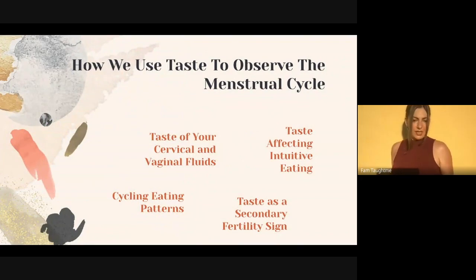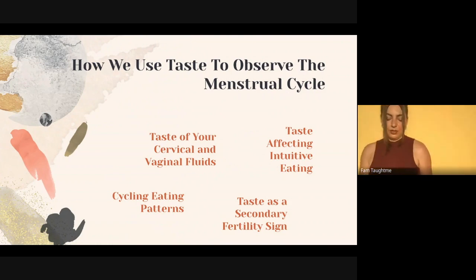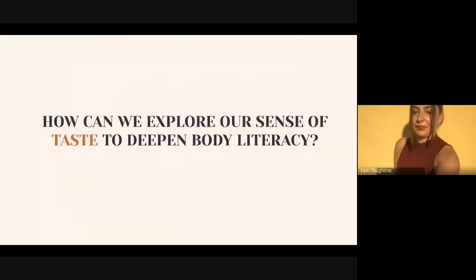How do we use taste to observe the menstrual cycle? We sometimes taste our cervical and vaginal fluids ourselves or partners taste them. Taste affects intuitive eating, so what you're craving changes. Taste is a secondary fertility sign where you notice changes associated with your fertile window. And we can cycle eating patterns, utilizing taste to cycle your eating patterns.